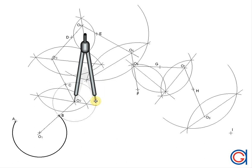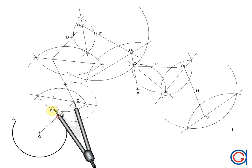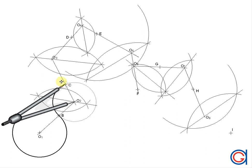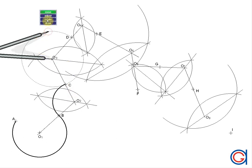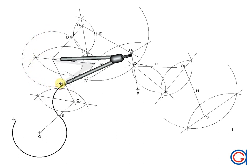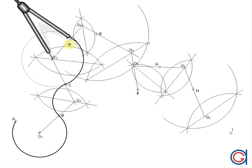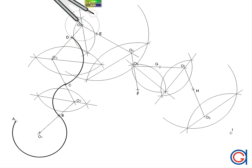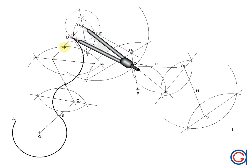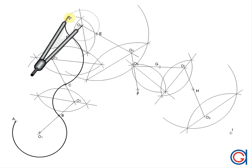Setting our compass on O2 with radius O2B, we draw an arc from B to C in the opposite direction. We then set the compass on O3 with radius O3C and join point C to D in the opposite direction again, as seen here in a thicker line. Continuing, we set the compass on O4 with radius O4D and draw a larger arc in the opposite direction.